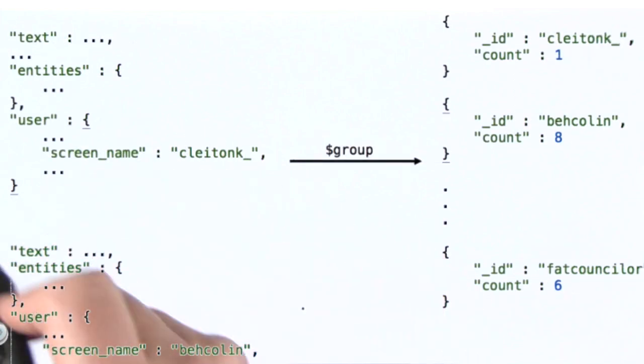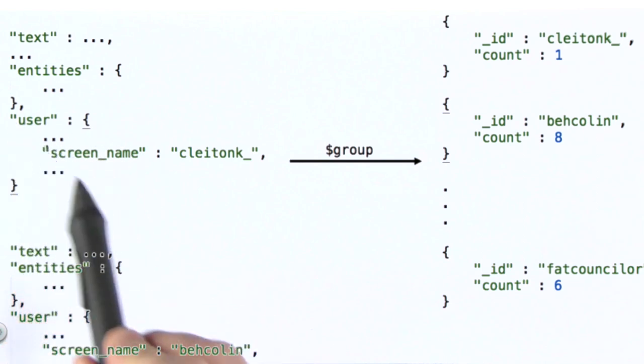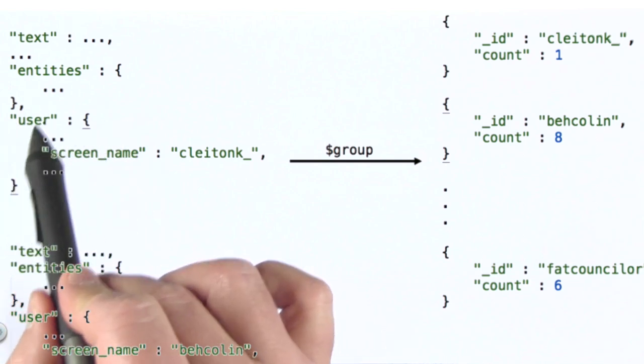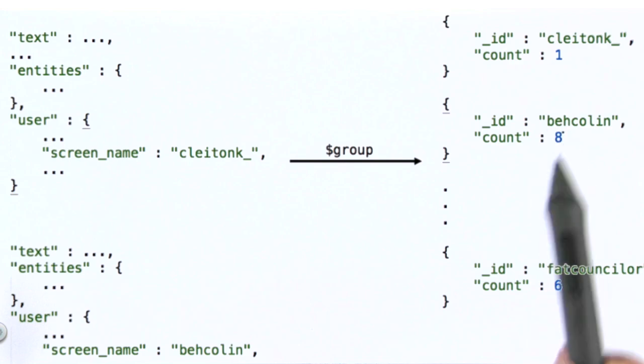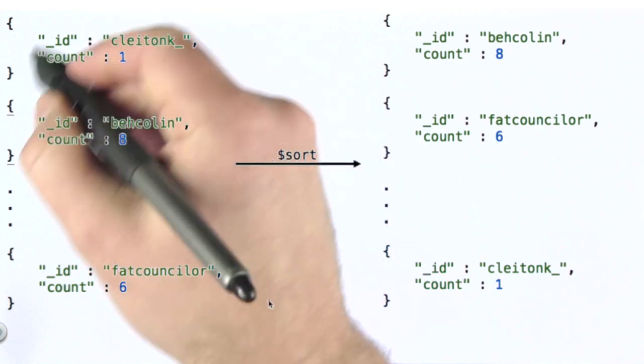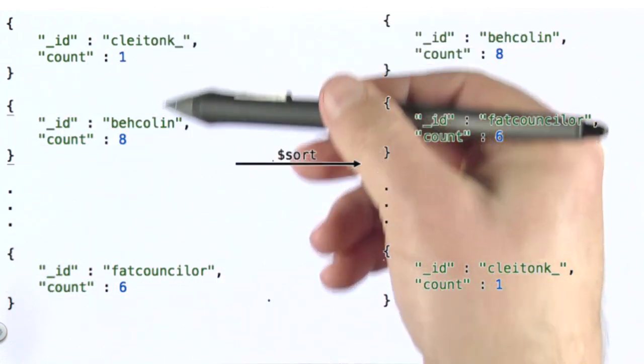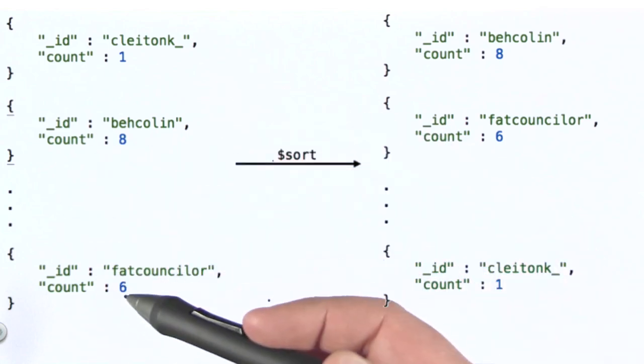So what does group do? Group is going to find the screen_name field for the user subdocument in each one of our tweets, aggregate them together, accumulate all of those tweets, and then count them. Here we can see that for this Twitter user, we get a count of eight tweets because that's how many were found in the entire collection. The group stage produces documents that look like this from documents that have the shape of those in the tweets collection itself.